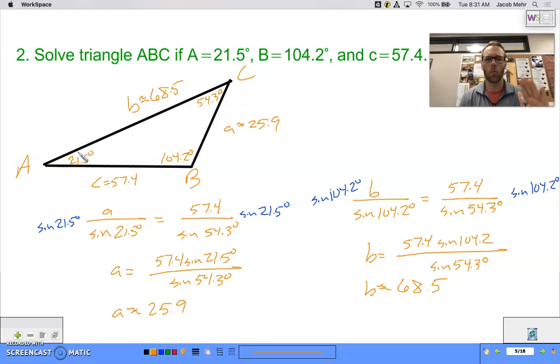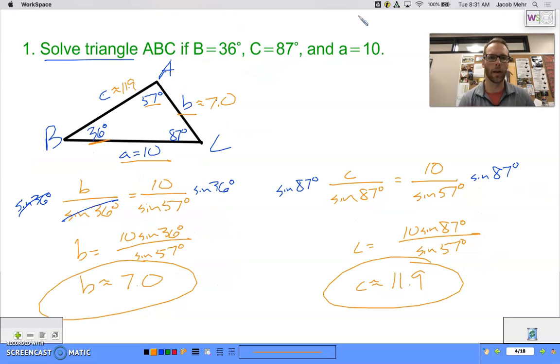All right. So where are we at here? Well, we have solved a couple triangles using the law of sines. Now take a look at the information that I've given you in both of these. In both of these problems, I've given you two angles and one side length. Two angles, one side length. Well, is that the only information that I could give you on a triangle for you to solve it? And the answer to that is no, it's not. So I'm going to stop this video here because in my next video, I'm going to go into a lot more detail about the other pieces of information that we could get. Okay. Thanks for watching.